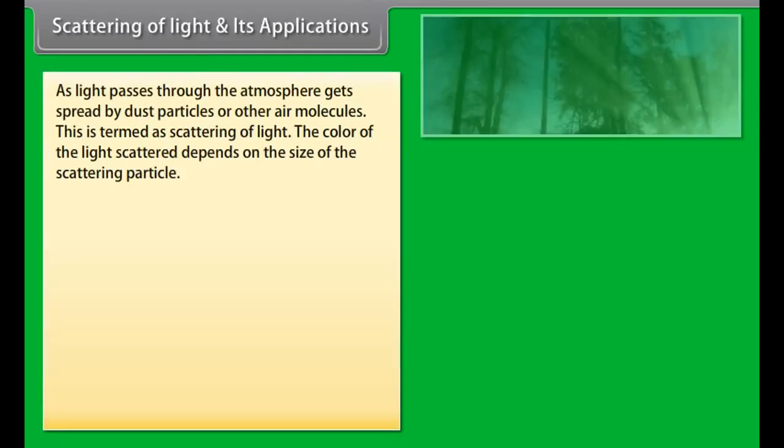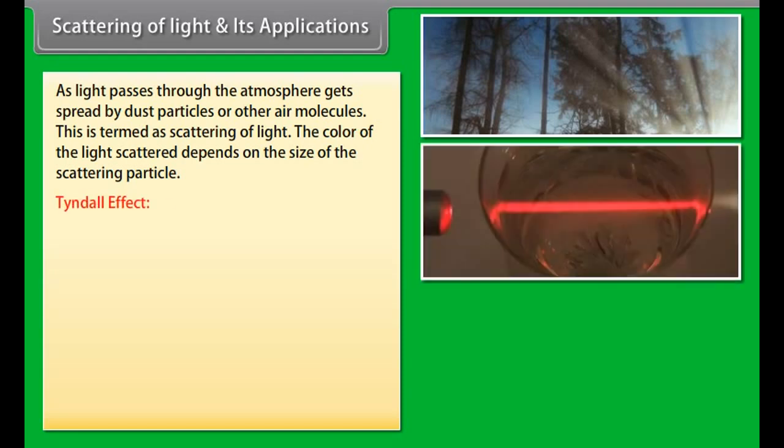As light coming from stars passes through the atmosphere towards the normal, the apparent position of star is seen above the real position of star. Also, the starlight keeps on wavering because of dynamic nature of atmosphere and hence stars appear to be twinkling.